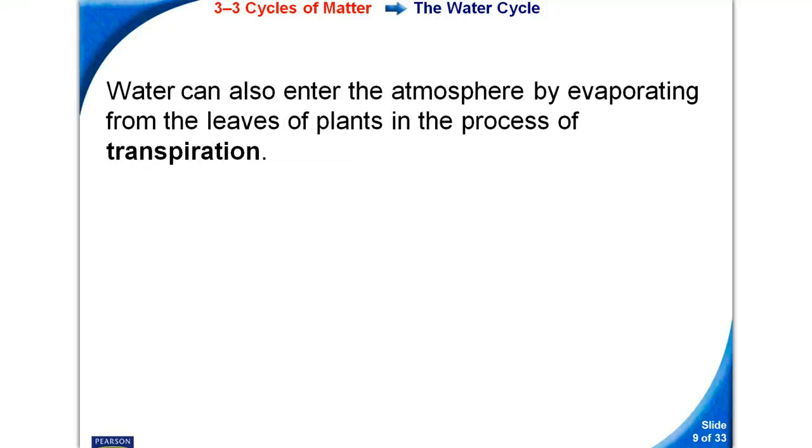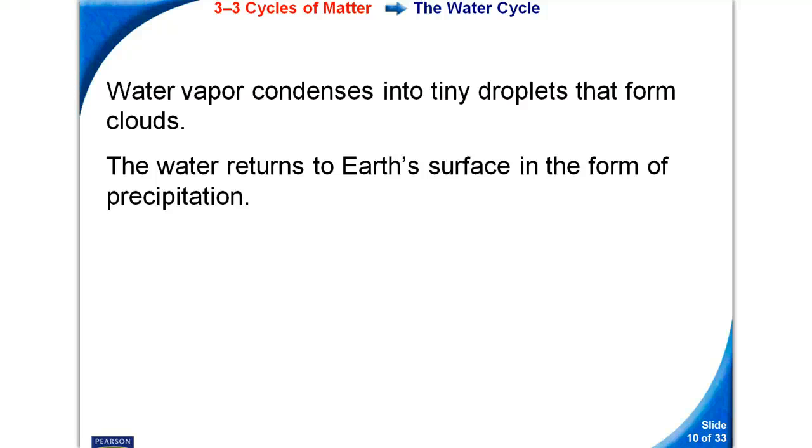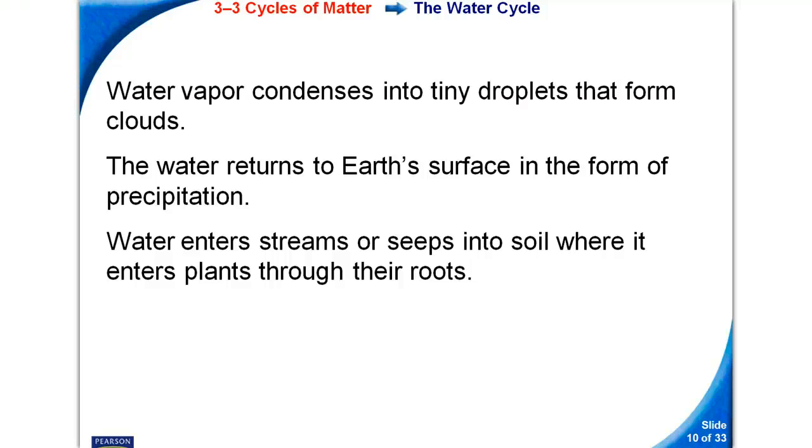Water can also enter the atmosphere by evaporating from the leaves of plants in the process of transpiration. Water vapor condenses into tiny droplets that form clouds. The water returns to the earth's surface in the form of precipitation, also known as rain.